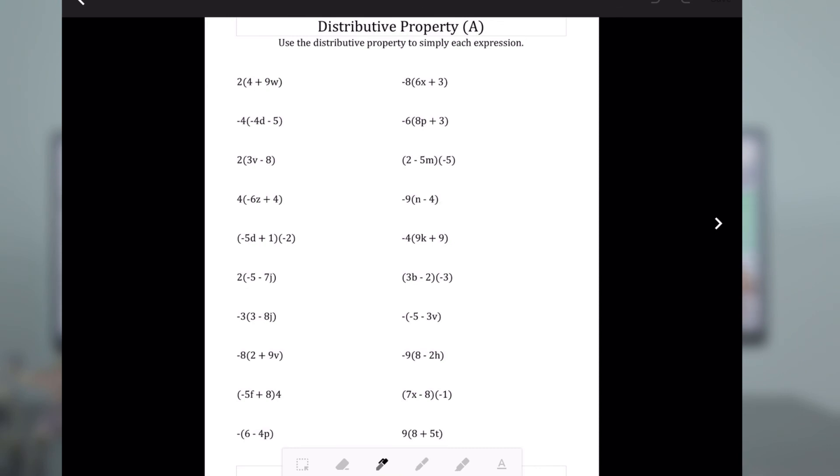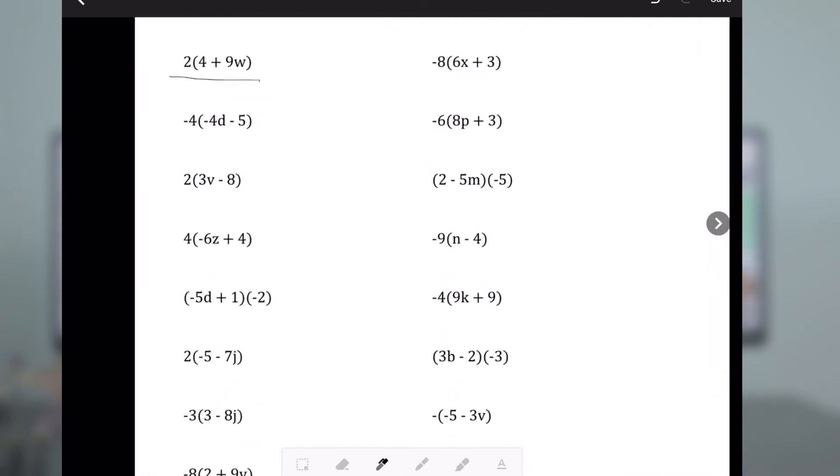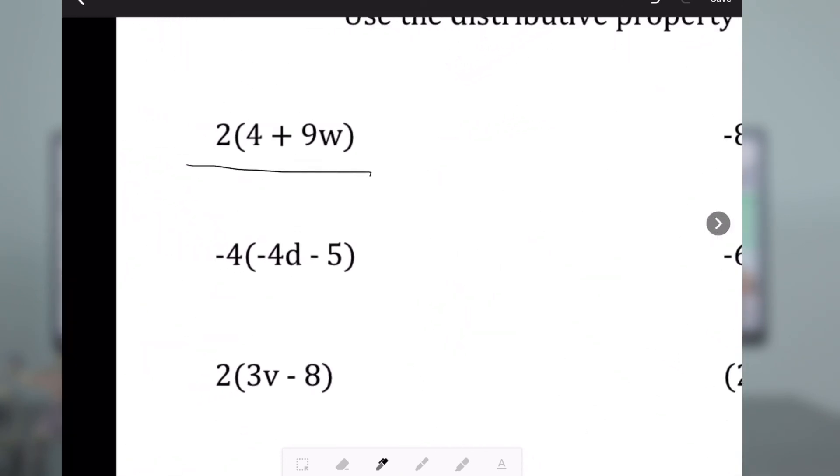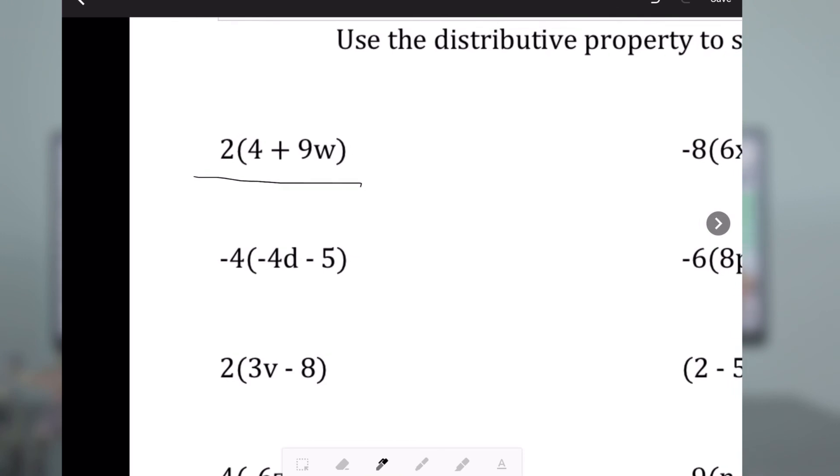So I know that the first thing is 2 times 4. This is a little small, so what I'm going to do is I'm actually going to use two fingers to move this so that it's a little more visible. Now I know that I need to use the distributive property. So that's going to become 2 times 4 is 8 plus 18w. Wow, that took me a second. But basically, that's all I had to do. I just drew with my finger, and now I added this PDF successfully.